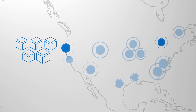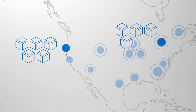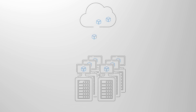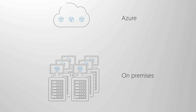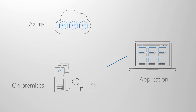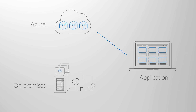With ASR you can replicate Azure VMs between Azure regions or you can replicate on-premises VMs and physical servers to Azure. Azure Site Recovery will coordinate virtual machine and physical server failover from your primary site to Azure and can fail back to the primary location once it's running again.